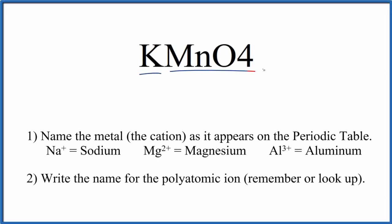To write the name for KMnO4, we first need to realize that K, that's potassium, that's a metal, and then MnO4, that's a polyatomic ion. So we have this metal, polyatomic ion. We're going to use these rules to write the name for KMnO4.